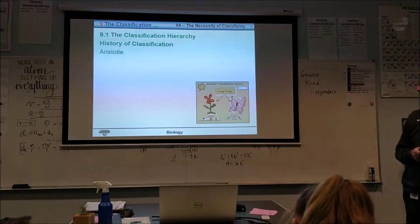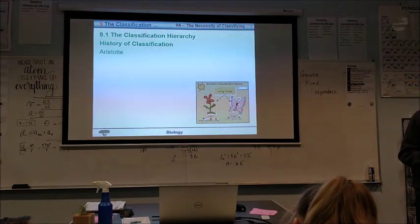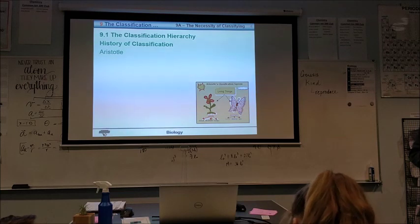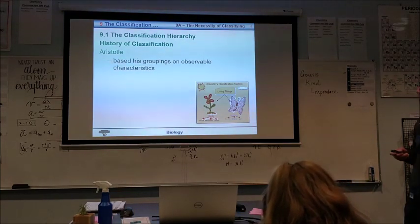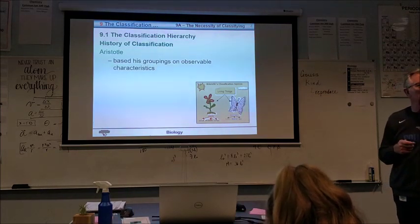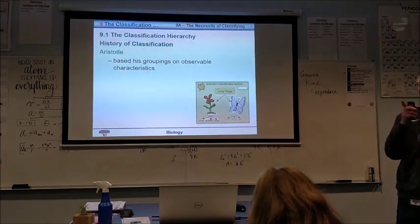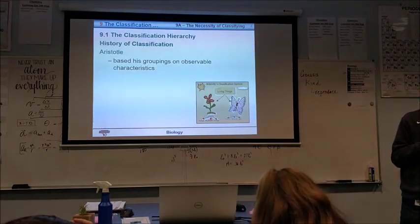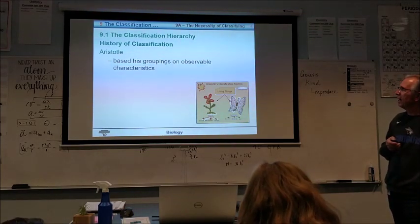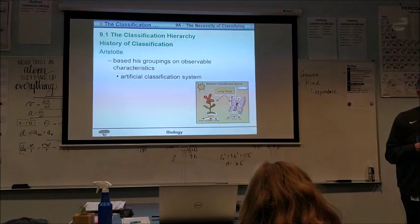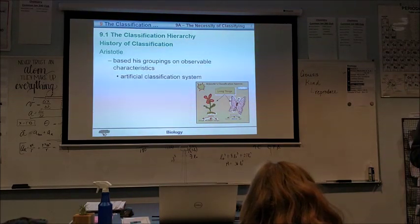Now, let's talk about, apart from that, then we have somebody by the name of Aristotle. He pops up quite often in science. And he based his groupings on observable characteristics. Based on observable characteristics. And we call this an artificial classification system. They just happen to look alike.